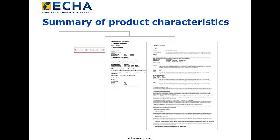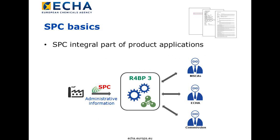SPC stands for Summary of Product Characteristics. It stipulates the terms and conditions related to making available on the market and use of the single or biocidal product family. The SPC is an integral part of a number of product related applications. While you would use Euclid 2.0 to submit scientific data, you use the SPC to submit administrative data.